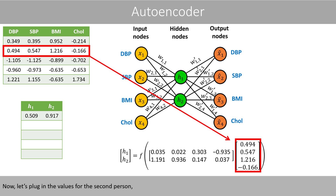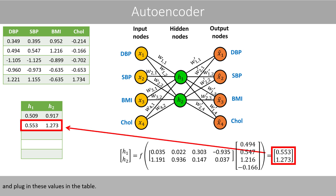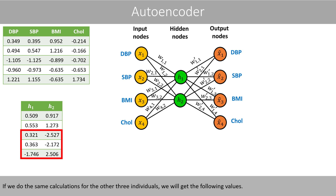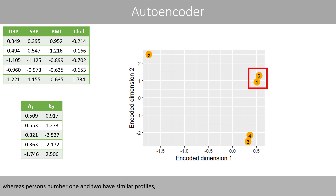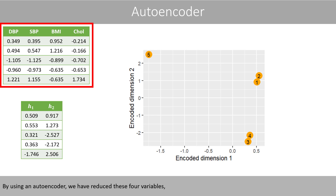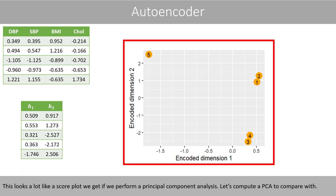Let's focus on the two values in the two hidden nodes for the first person and place these two values in the following table. Now let's plug in the values for the second person, do the math, and plug in these values in the table. If we do the same calculations for the other three individuals, we will get the following values. If we now plot these scores, we can see that person number five has a health profile that deviates quite much from the other four individuals, whereas persons number one and two have similar profiles, which is true also for persons number three and four. By using an autoencoder, we have reduced these four variables into just two.